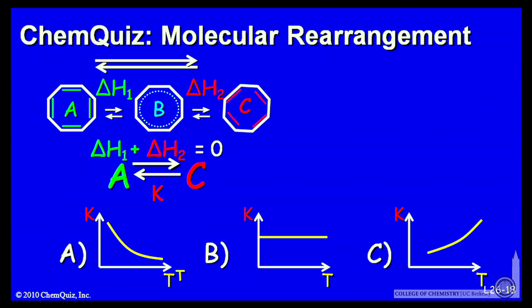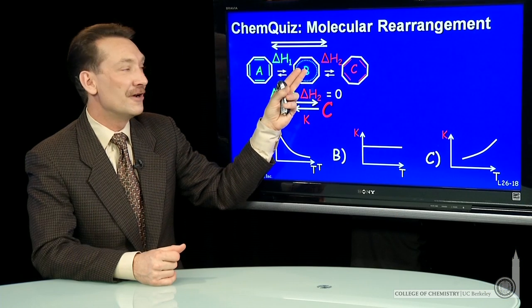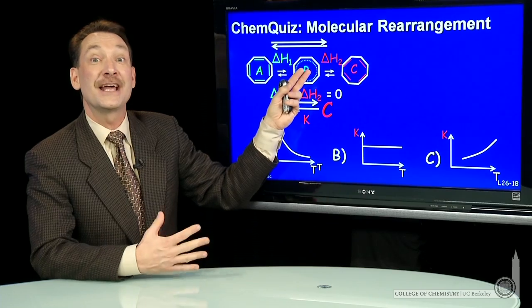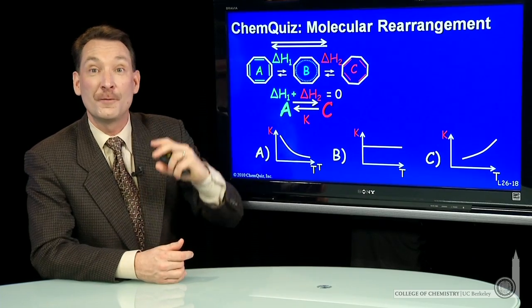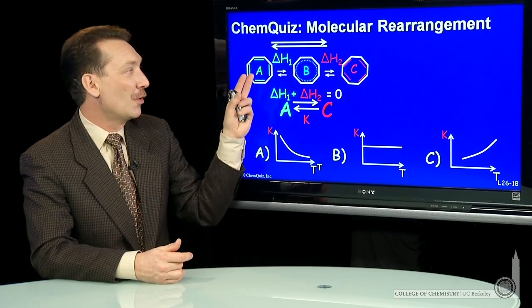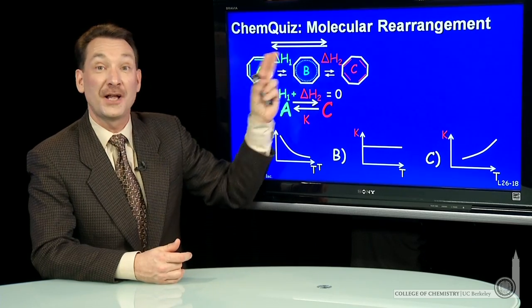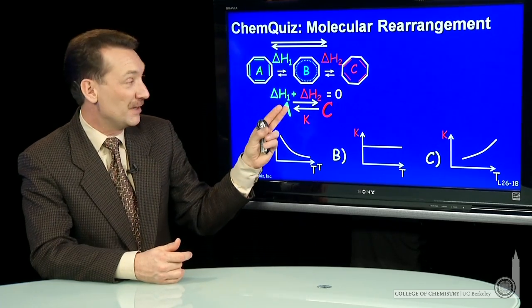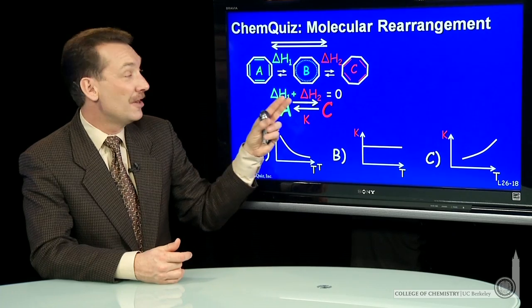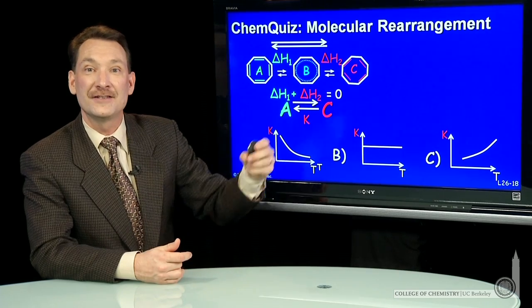So delta H1 breaking the bonds, that would be endothermic. Delta H2 would be exothermic and the same magnitude. That is, I put in energy here to break those bonds, but then I get all that back because I form the same bonds. So the sequential reaction A going to C, delta H1 plus delta H2, would be the enthalpy for that reaction. Those are equal and opposite, so they add to zero.